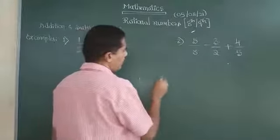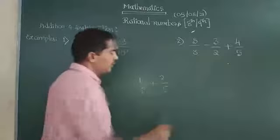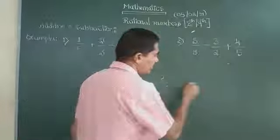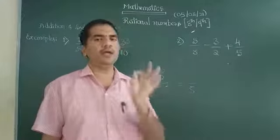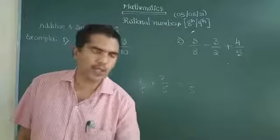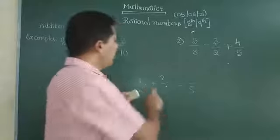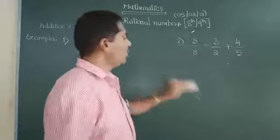1 by 5 plus 2 by 5, keep the denominators same and just add or subtract the numerators. Numerators are added or subtracted depending on whichever operation is given.